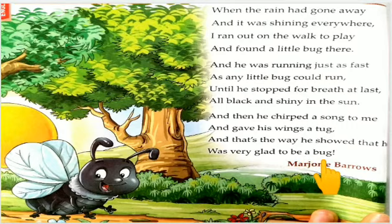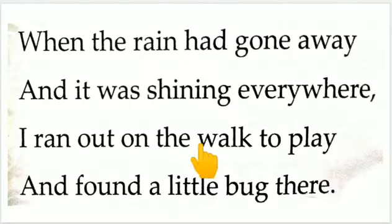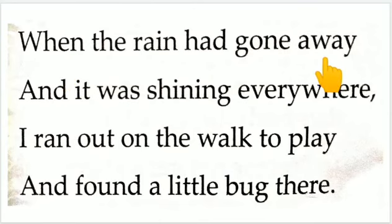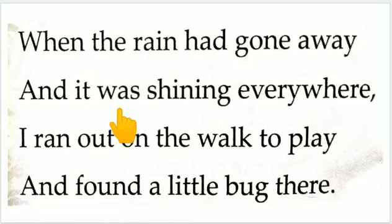Now students, we understand each paragraph. Let's see. When the rain had gone away — jaise hi baarish ruki. And it was shiny everywhere — har taraf suraj ki roshni phelke.